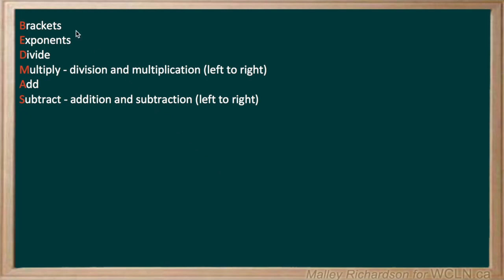Now that we know BEDMAS, we can carry on with our first problem, which is 3 plus 4 times 2. We go through our list: the expression does not have any brackets, it doesn't have any exponents, no division, but it does have multiplication. So we have to do that multiplication first, where 4 times 2 is 8, and 3 plus 8 is 11. And that's it for our first question.